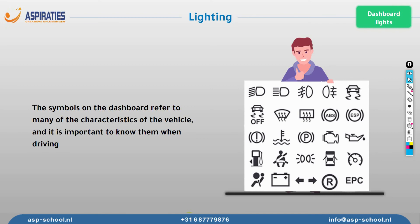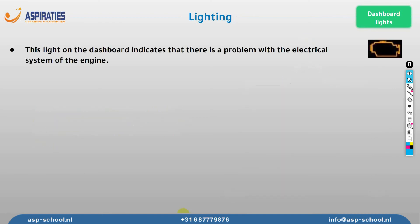There are different kinds of symbols we can see on the dashboard, and with features being added to cars almost every day, those symbols are increasing. We don't have to memorize everything, but there are a few we must know. The check engine light is one of the most common — it's orange and indicates a problem with the engine, usually electrical. In most cases it's a minor issue, the computer may not be reading information correctly, and you can usually keep driving normally.